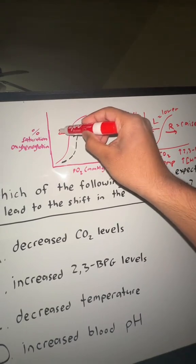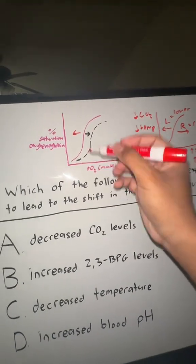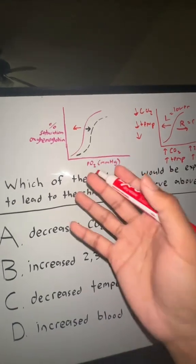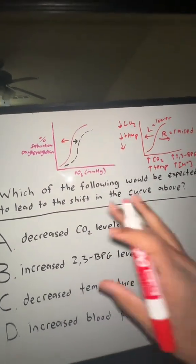If we had a left shift, that means that the affinity for oxygen would be higher, and so oxygen would not be delivered to tissues at all. That's the general idea of this.